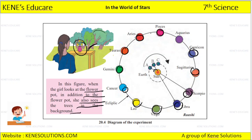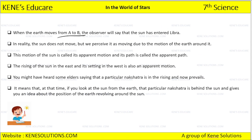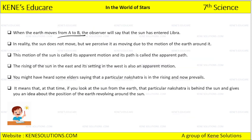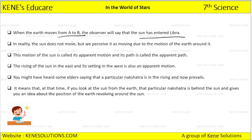Like the earth revolves around the sun, the constellation behind the sun also keeps changing. When the earth moves from position A to B, the observer will say that the sun has entered Libra. In reality, the sun does not move, but we perceive that it is moving due to the motion of the earth. This motion of the sun is called its apparent motion and its path is called the apparent path.